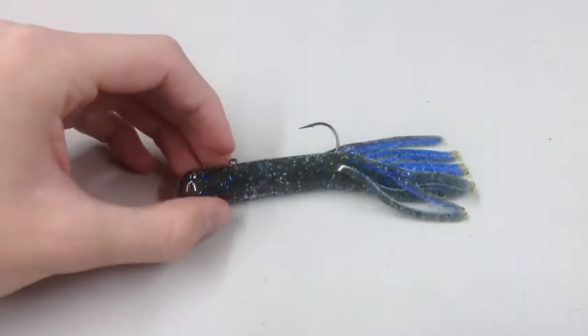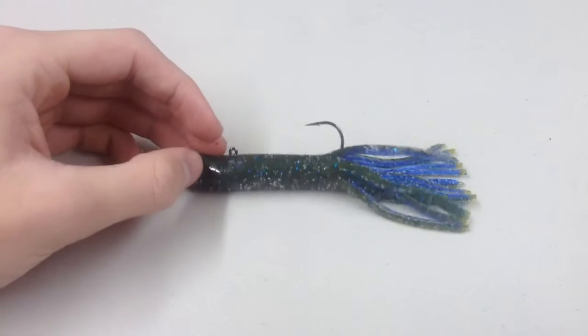And then the half ounce for your bigger tubes. This is the Berkeley Havoc Smash tube. It's four inches.